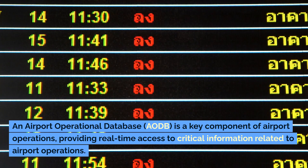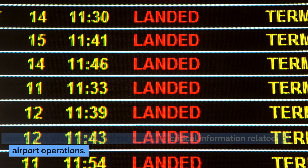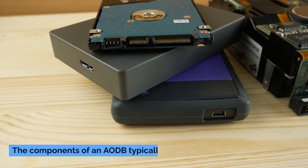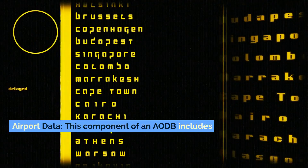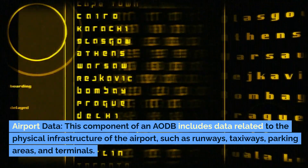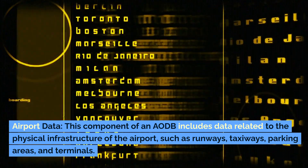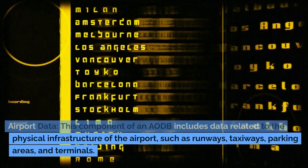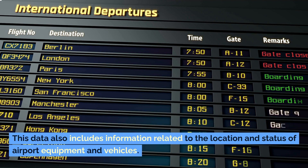An airport operational database (AODB) is a key component of airport operations, providing real-time access to critical information. The airport data component includes data related to the physical infrastructure of the airport such as runways, taxiways, parking areas, and terminals. This data also includes information related to the location and status of airport equipment and vehicles.